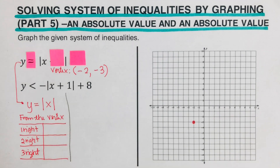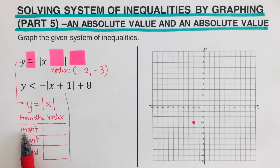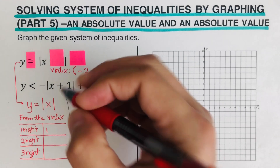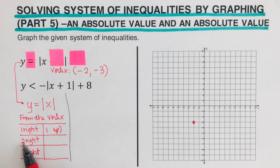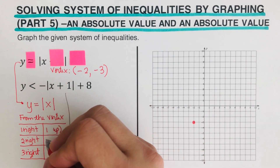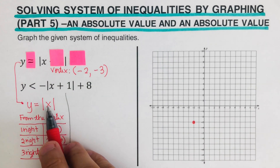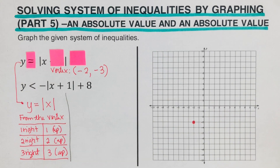The table is set up — it's always going to be one right, two right, three right. We plug one, two, and three into x. The absolute value of one is one, so we go up. The absolute value of two is two, so we go up. The absolute value of three is three, so we go up. From here we can sketch the rest of the dots to create this inequality.